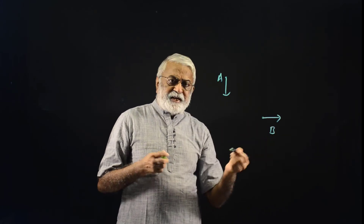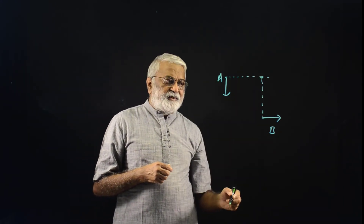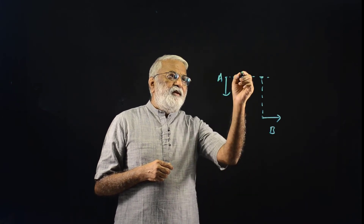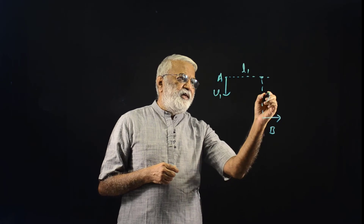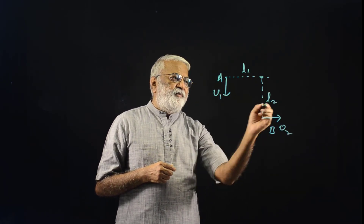If you know the velocity of any two points of a rigid body in combined translation plus rotation, you can find the instantaneous axis. Say point A has a velocity in one direction and point B has a velocity in another direction — perpendicular to each of those velocities, the instantaneous axis must lie on that perpendicular. They intersect at I — that is the instantaneous axis. If L1 and V1 are the distance and speed for point A, and L2 and V2 for point B, then L1/V1 should equal L2/V2.